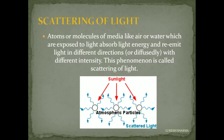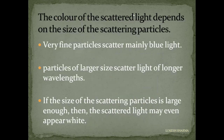The next topic is scattering of light. The atoms or molecules of media like air or water, when exposed to light, absorb light energy and re-emit light in different directions with different intensity — this phenomenon is called scattering of light. The color of scattered light depends on the size of the scattering particles. Very fine particles scatter mainly blue light, whose wavelength is very small. Particles of larger size scatter light of longer wavelength, and if the particles are large enough, the scattered light may appear white.